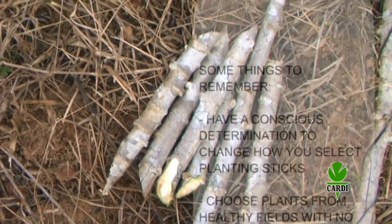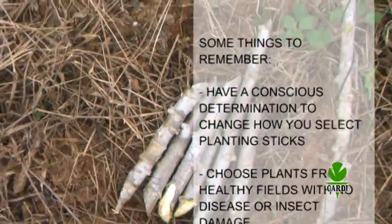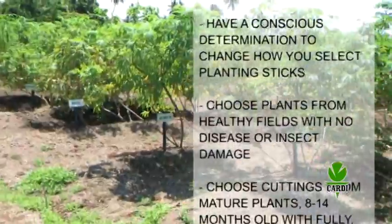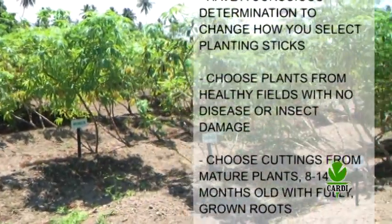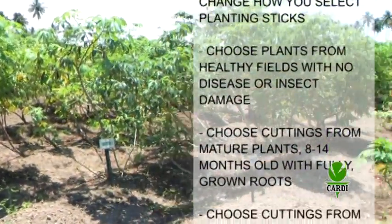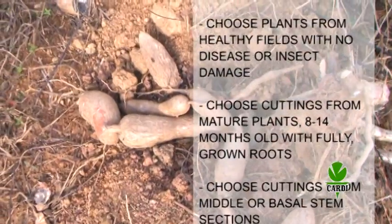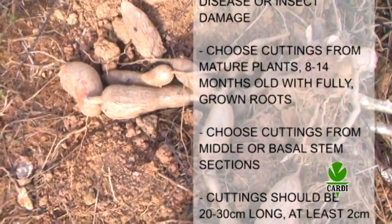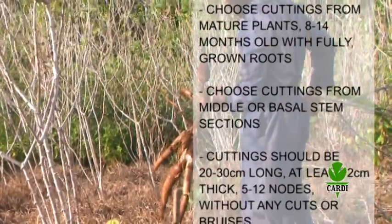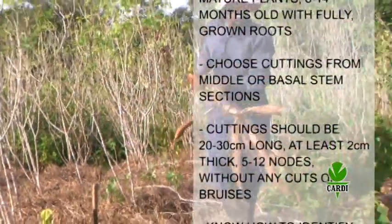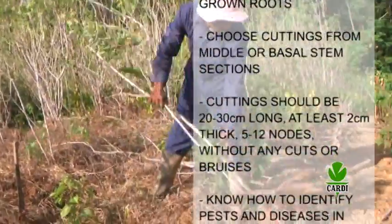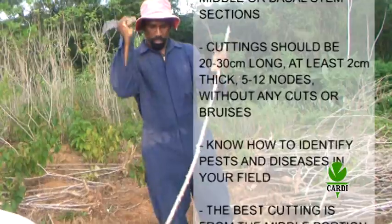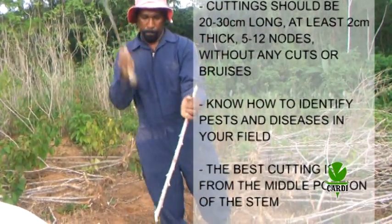To recap, here are the key points to remember. Have a conscious determination to change how you select planting sticks. Choose plants from healthy fields with no disease or insect damage. Choose cuttings from mature plants 8 to 14 months old with fully grown tubers. Choose cuttings from middle or basal stem sections. Cuttings should be 20 to 30 cm long and at least 2 cm thick, with 5 to 12 nodes, without any cuts or bruises.